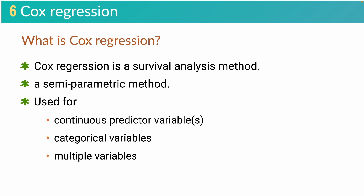So, what is Cox regression? Cox regression is also known as Cox proportional hazard regression, or Cox PH regression. It is a statistical method used to analyze the relationship between survival time and one or more predictor variables. This is a semi-parametric method, which makes fewer assumptions about the distribution of survival times compared to parametric tests. Cox regression can be used for continuous predictor variables, categorical variables, and it can be used to build a prediction model for multiple variables.